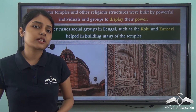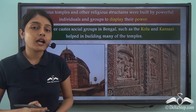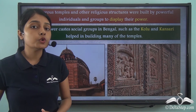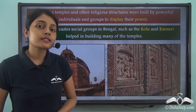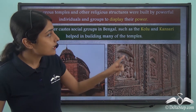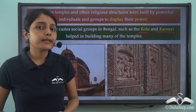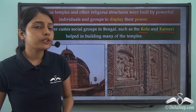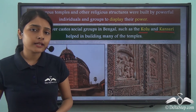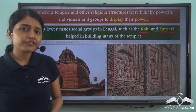Now whenever we talk about temples constructed in ancient or medieval times in the Indian subcontinent, we invariably associate them with upper caste members, because it were the Brahmanas who had access to the religious places. They were the ones who were allowed to enter the temples to offer their prayers and devotion to the gods. Now around this time, many lower caste social groups in Bengal, such as the Kolu and Kansari, also helped in the construction of many temples. Now a very important question is: how did these lower caste social groups get the money and resources required to build a temple, because building a temple is a very expensive affair?